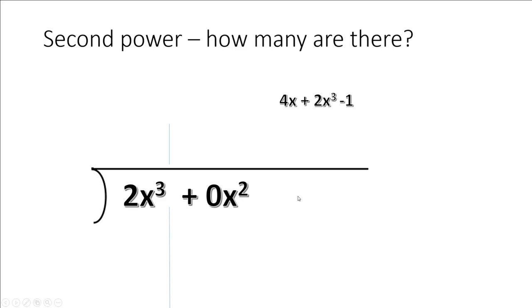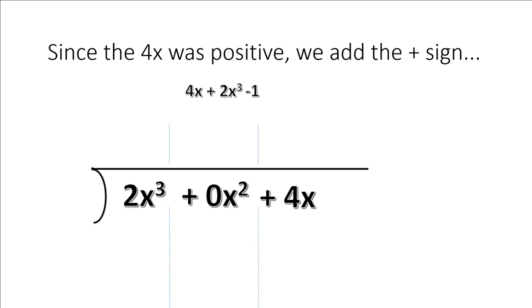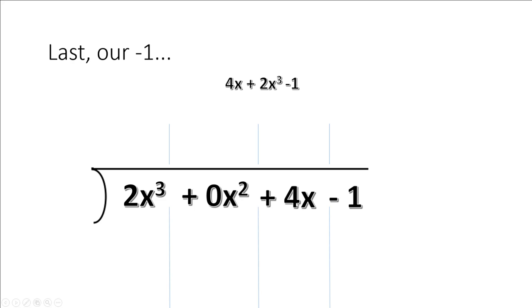Here's my third power, the second power. How many are there? None. We need to say so, just like we'd have a zero in a number. Down to the first power, that's my 4x, and since it's positive we say plus 4x. And then the last one, our minus 1, that's got no power. We write our divisor in. Now let's start dividing.